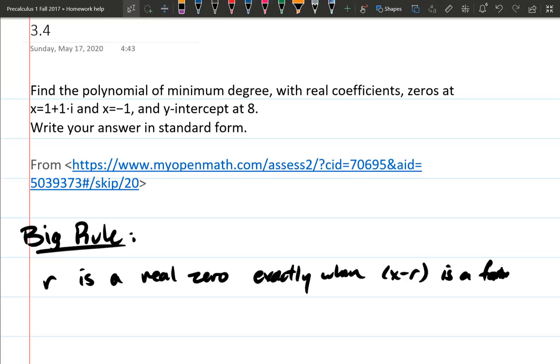So we're going to look at question number 20, and this is create a polynomial of minimum degree with real coefficients, and that is important, real meaning they're not complex, and there are certain zeros that are listed. Now in the original problem, it said 1 plus or minus 1i.